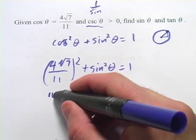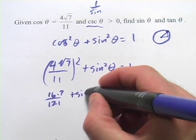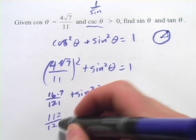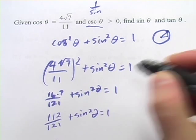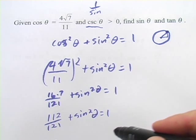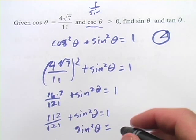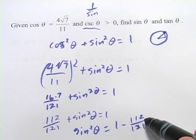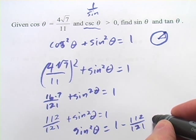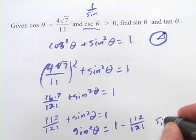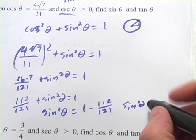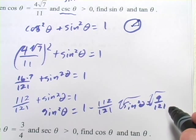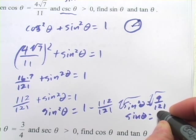That gives us 16 times 7 over 121 plus sine squared theta equals 1, which is 112 over 121 plus sine squared theta equals 1. If we subtract 112 over 121 from both sides, we get sine squared theta equals 1 minus 112 over 121, which is 9 over 121. Then we take the square root of both sides, taking the positive value as mentioned, and we get sine of theta equals 3 over 11.